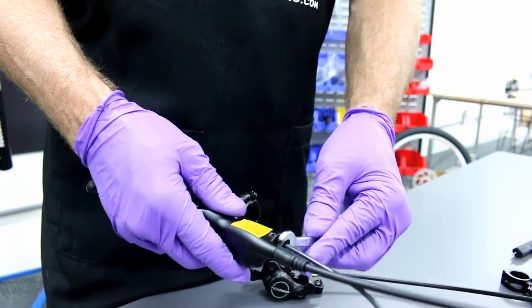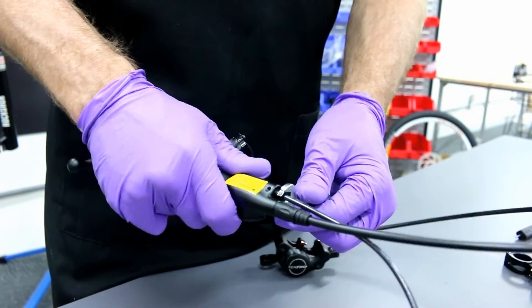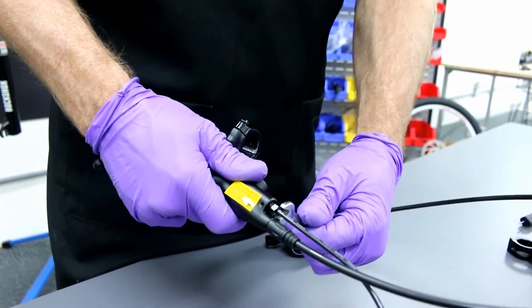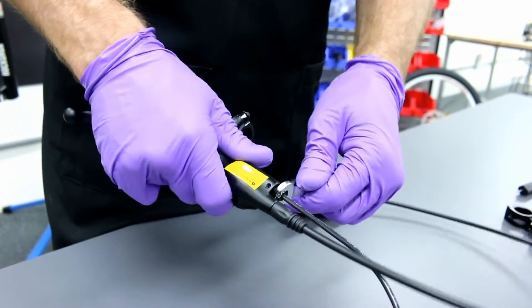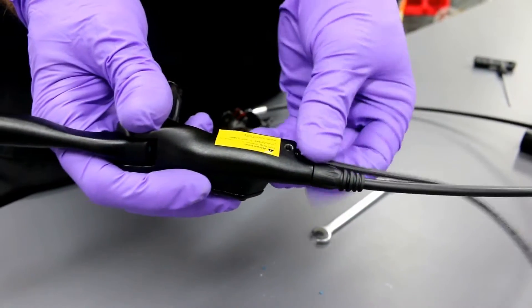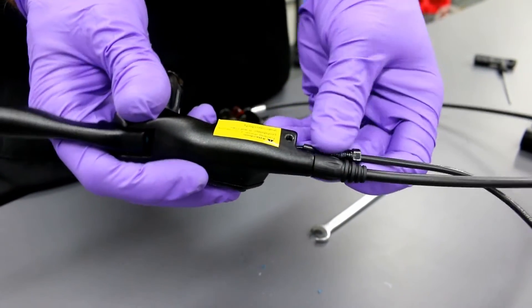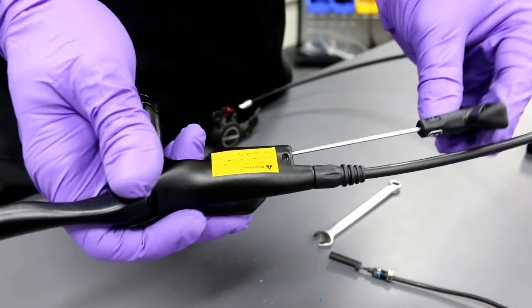Next, using 7mm open end wrench, I'm going to take out the sensor. As you remove the sensor, there is a spring in there that you're also going to want to get out.